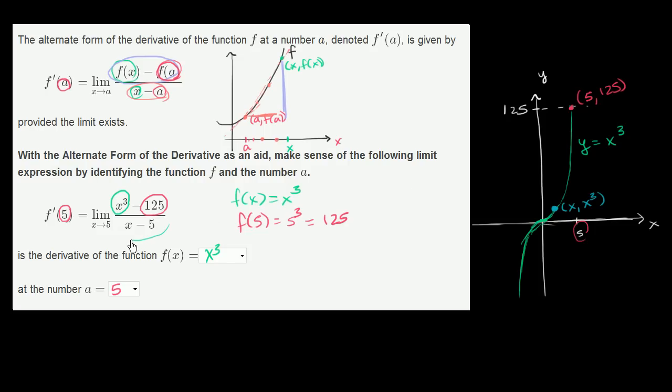And so this expression right over here is the slope between these two points. As we take the limit as x approaches 5, as x gets closer and closer to 5, these secant lines are going to better and better approximate the slope of the tangent line at x equals 5. So the slope of the tangent line would look something like that.